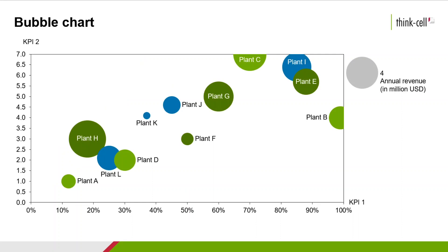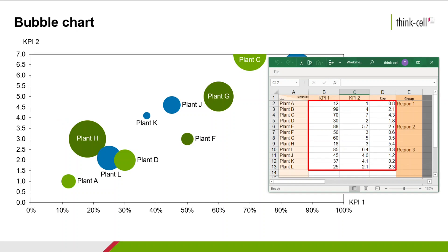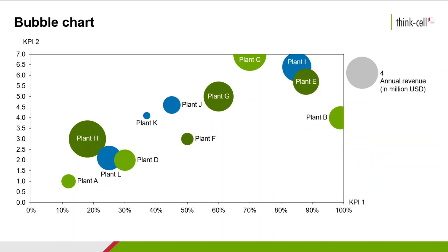The bubble chart is a variant of the scatter chart, with data points marked by bubbles. It is based not on pairs, but triplets of data, with the third data series determining the size of the bubble. A bubble chart could display the relationship between two KPIs and the annual revenue, represented by the bubble size.